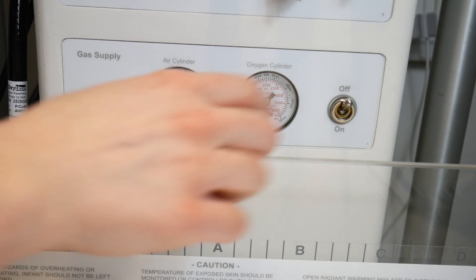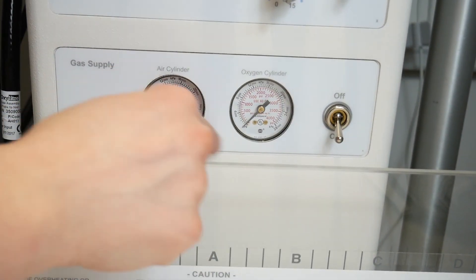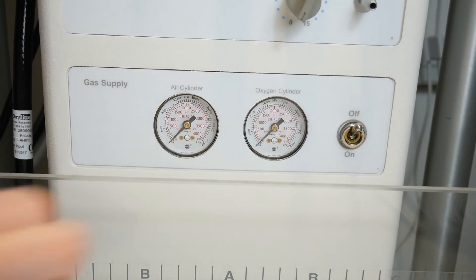These dials show how much air and oxygen are in the tanks behind the resuscitaire, and this switch should be used whenever the gases are in use.